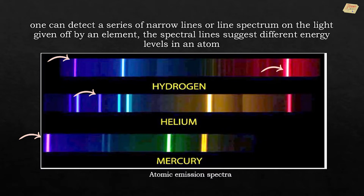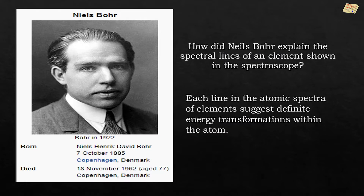One can detect a series of narrow lines, called a line spectrum, in the light given off by an element. The spectral lines suggest different energy levels in an atom. How did Niels Bohr explain the spectral lines of an element shown in a spectroscope? Each line in the atomic spectra of elements suggests definite energy transformations within the atom.